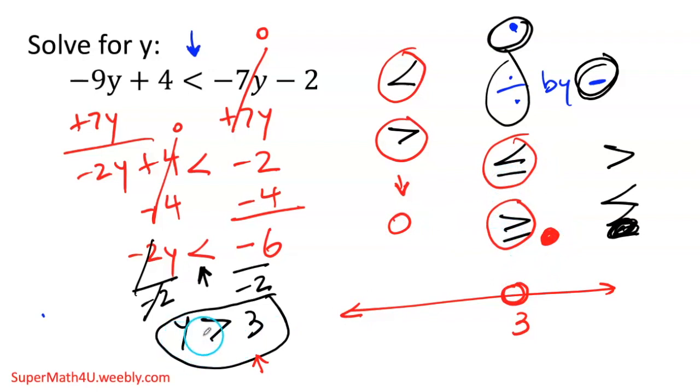Now let's read. Y is greater than 3. Greater than 3 is 4, 5, 6. Right? 4, 5, 6. So my arrow, my inequality is going to go to the right and this will be your inequality.